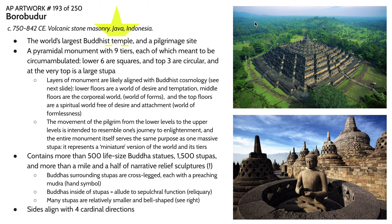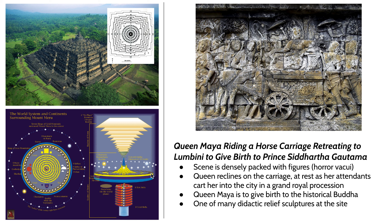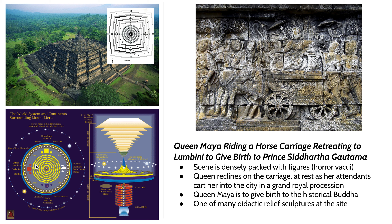The sides of this particular monument also align with the four cardinal directions, which is again one of those things represented in the cosmological map. The ground plan of Borobudur gives a sense of these tiered layers, especially at the top in the worlds of forms and formlessness, where we see a pretty interesting similarity to the cosmological map. This is very intentional.